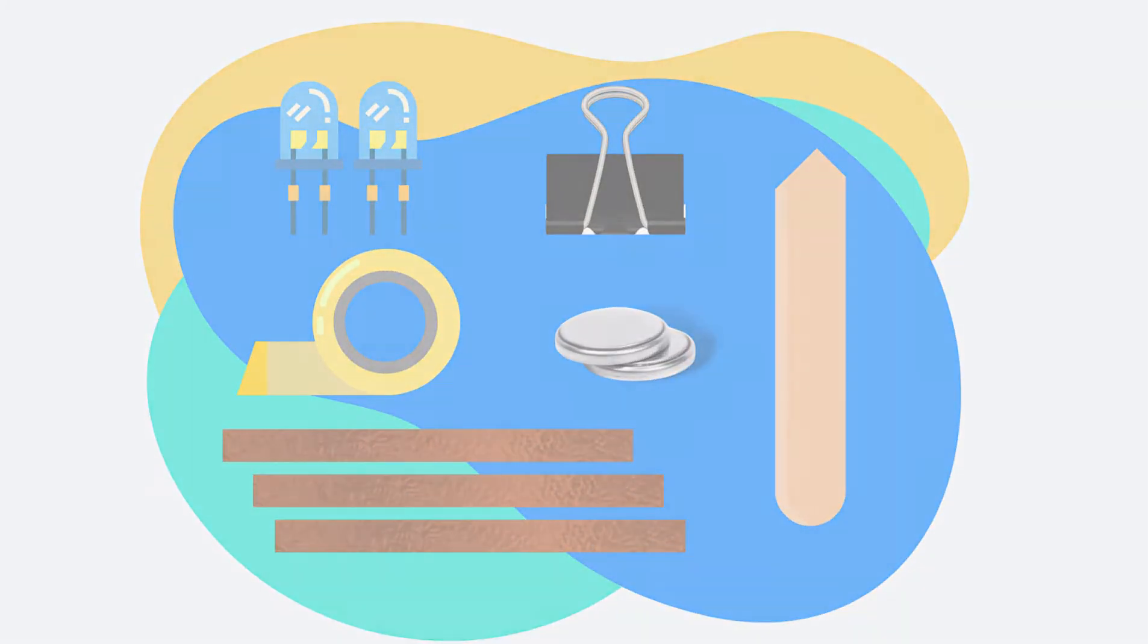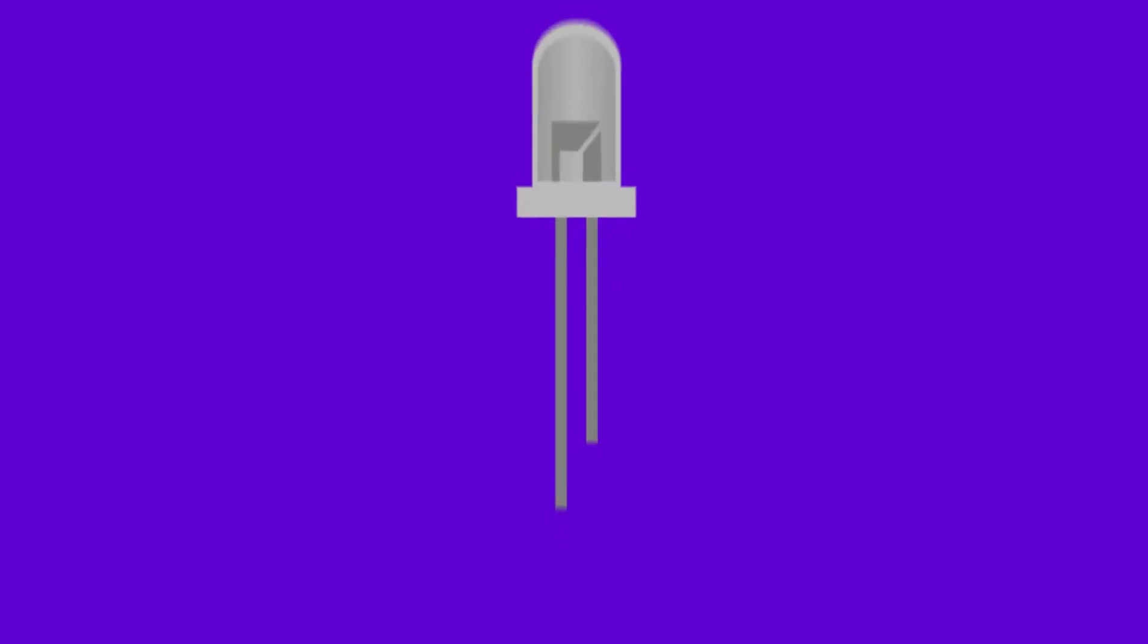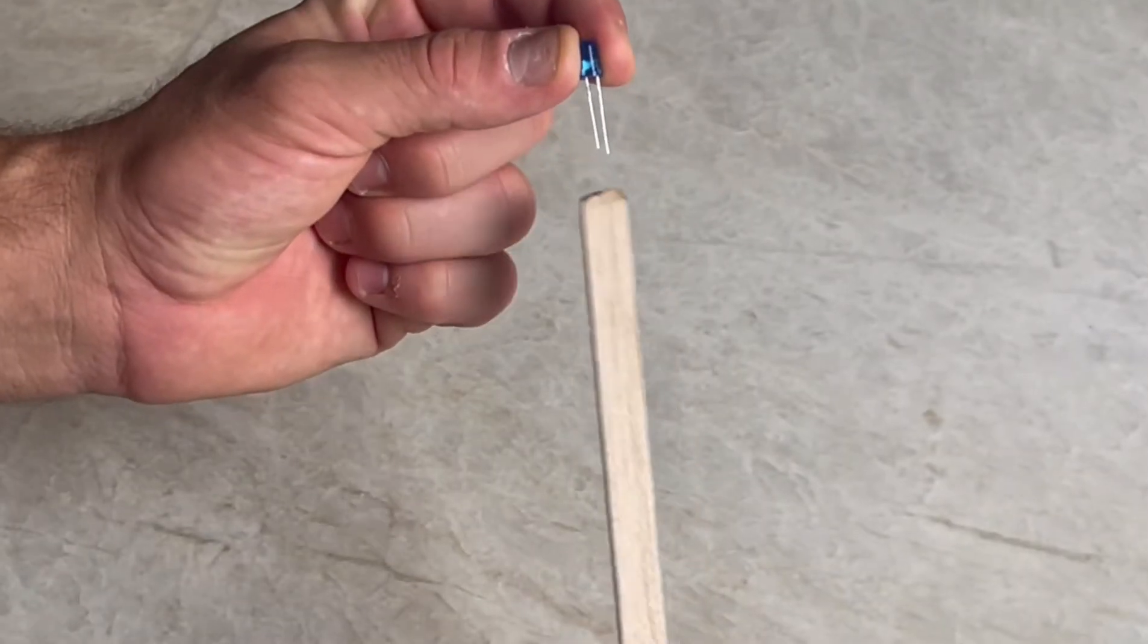Ever seen one of these before? It's called an LED and this is where the light will be emitting from on our flashlight. Remember in the last video we said that everything in electricity has a positive and a negative side? This will be important to remember and the shorter diode on the LED is actually the negative and the longer one is the positive.